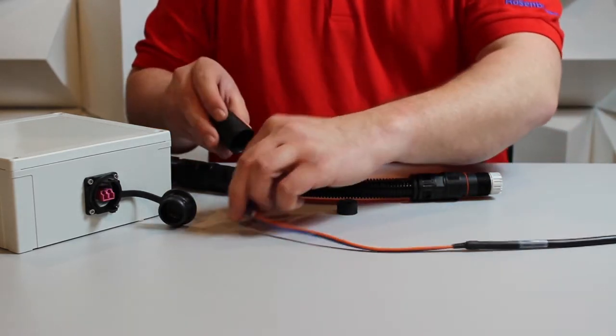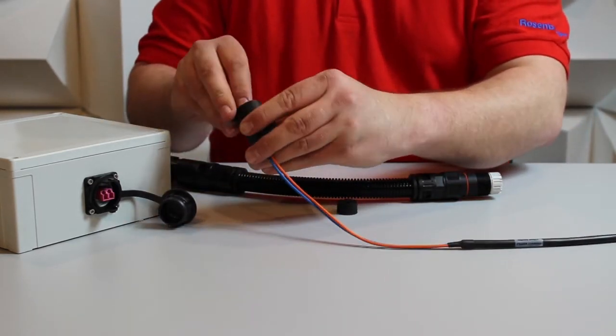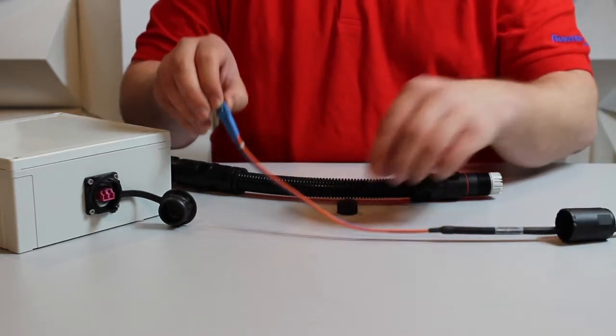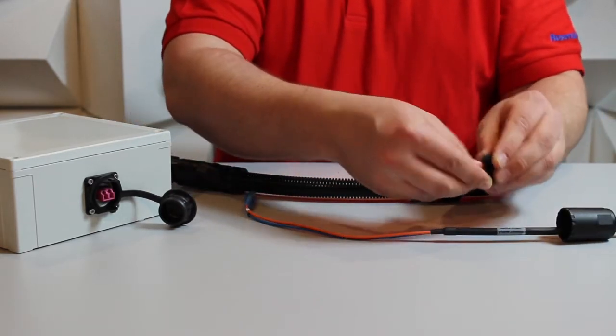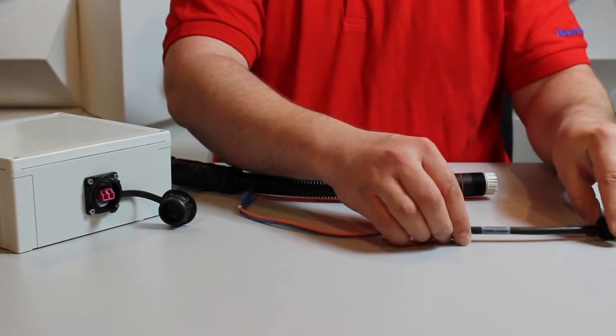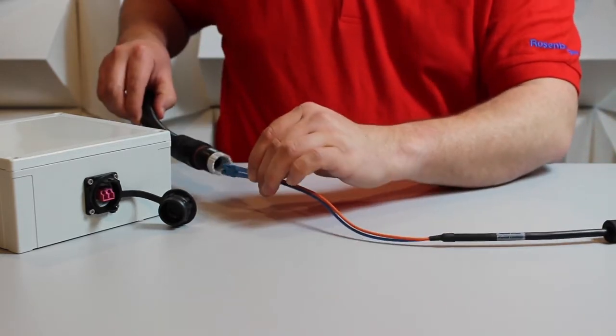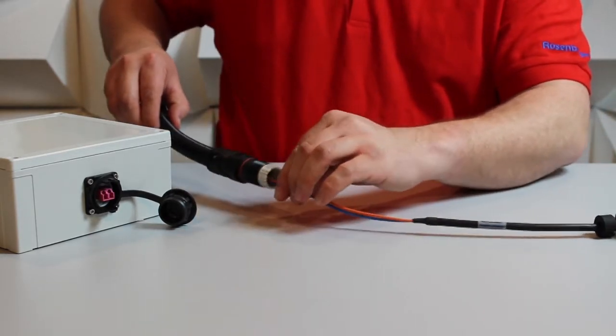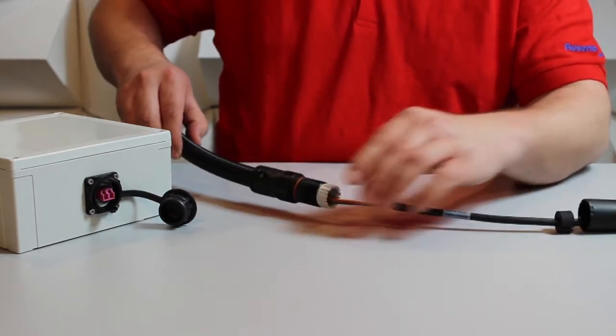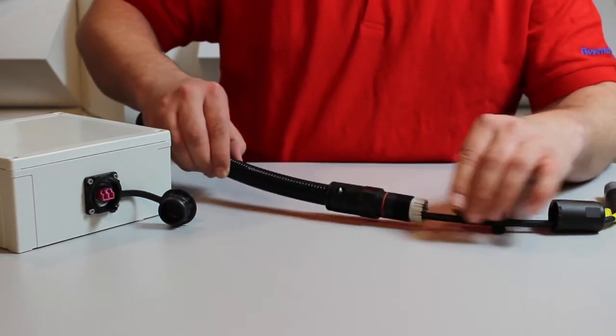As with the standard RFE, we place our back nut over the cable and then our slotted grommet, and then we carefully slide our cable through the extension like so.